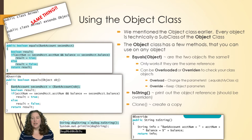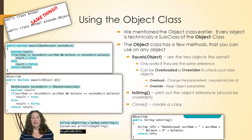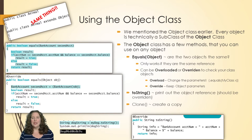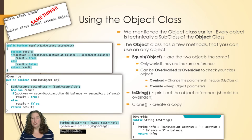We've mentioned the object class before but kind of in passing. The object class is the Java class that all references are a part of — everything inherits the object class. It's just the default parent of all the objects you've been creating. There are a few methods we can use on any object that you've used before: equals, toString, and clone. Clone creates a copy, and all of these methods can be overridden or overloaded in your specific classes.